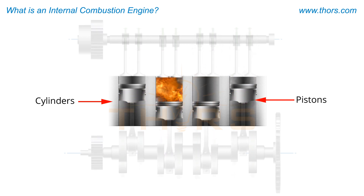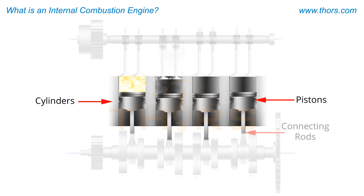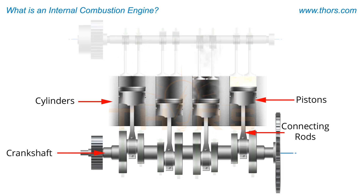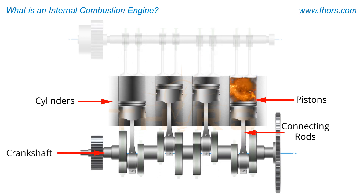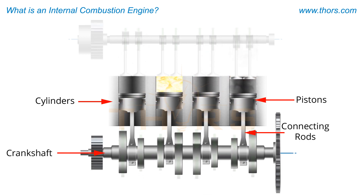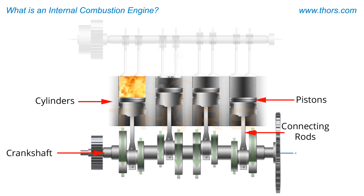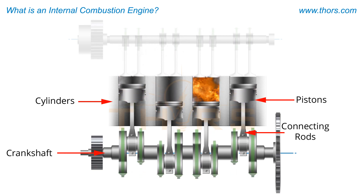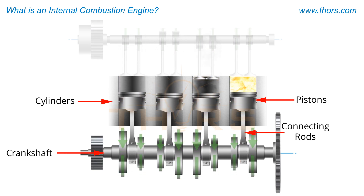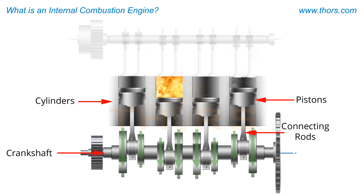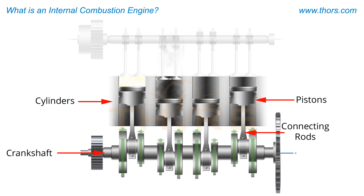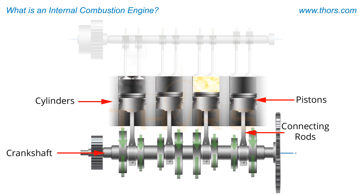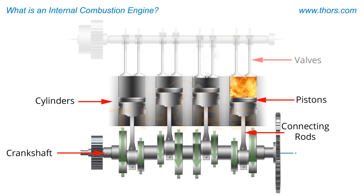The pistons are connected via connecting rods to the crankshaft. The linear motion of the pumping pistons is then converted to rotational motion by the crankshaft. While running, an engine requires a constant supply of air-fuel mixture.